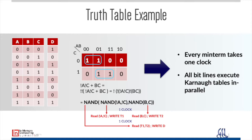Every bit line acts like a processor. In this chip we have two million bit-line processors and can do two million logic operations in parallel in one clock — that's like two peta-operations per second. For example, we can do XOR search at two peta-operations per second in this chip.